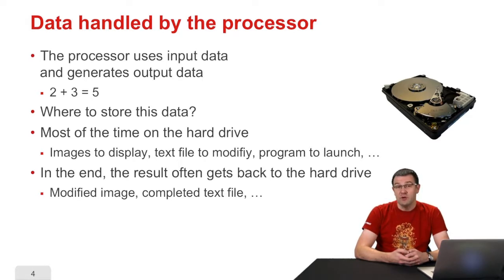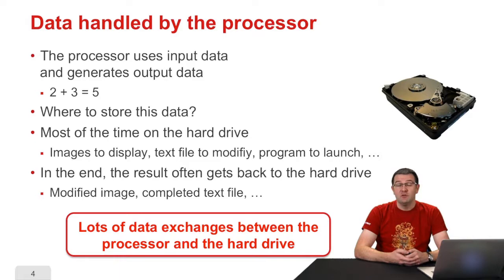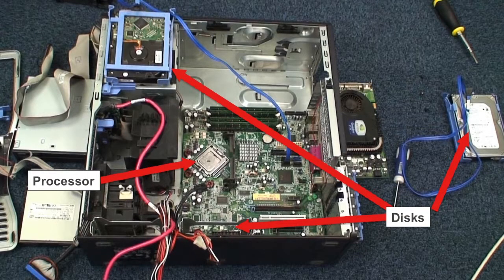After executing the program, the result will generally be saved on the hard drive, whether it is an image modified by retouch software, a text file that has been modified, etc. So technically, there are lots of exchanges happening between the processor and the hard drive. That's the hard drive in Erwin's video — the drives were located in slots at the bottom of the machine, and Erwin disassembled them and placed them on the top left and on the right. You can see they are connected by a blue wire to the motherboard, linking them to the processor, and data exchanges happen through those wires.